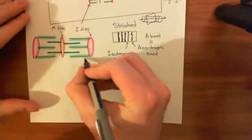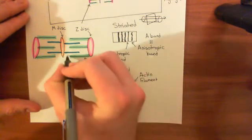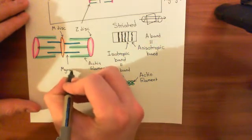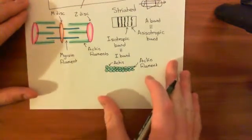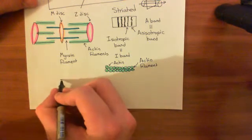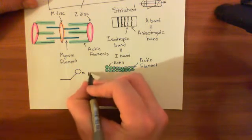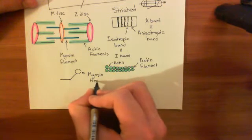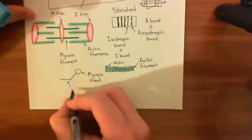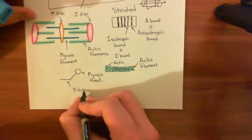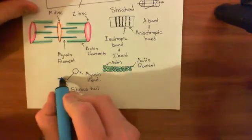So in green we have the actin filaments, and in blue we have the myosin filaments. Let me explain what a myosin filament is. Myosin protein is a small protein. The structure of a myosin protein is that you have a fibrous tail, and then coming off at an angle you have a head — this is known as the myosin head, or the myosin light chain. We'll refer to it as the myosin head in this video; you only need to call it the myosin light chain when talking about smooth muscle. And this is the fibrous tail of the myosin protein.